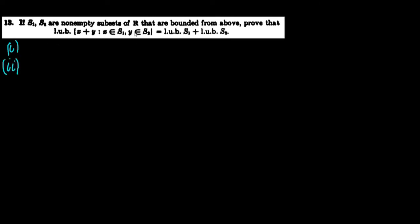We're going to prove this in two separate parts. In the first part, we want to be able to talk about the least upper bound of this set, which I'll call W. Let W equal the set {x plus y : x ∈ s1, y ∈ s2}.